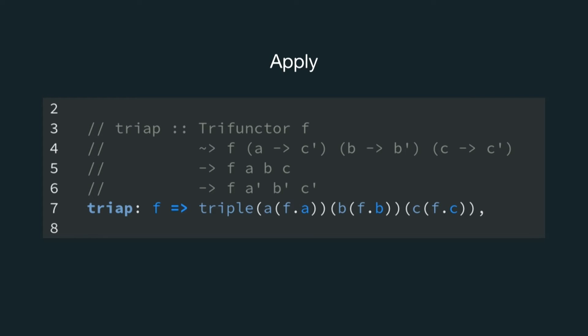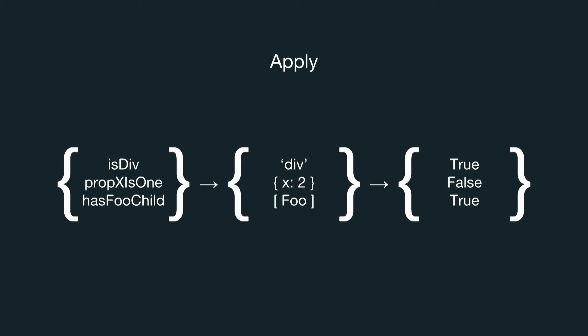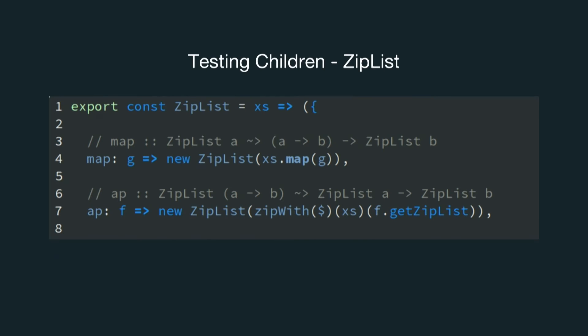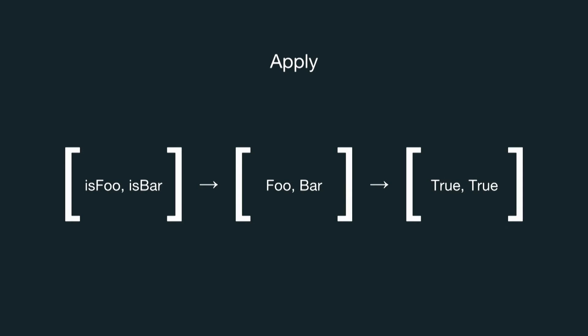Tri-ap, to implement the apply specification, is not too different in implementation. Now we provide a triple representing three functions rather than providing three functions as in the tri-map call. Given a triple of A-to-B functions — where we can imagine A-to-B being a VDOM value to a Boolean — we apply a triple representing VDOM values and get back a triple representing results, in this case Boolean values indicating test success. And if we want to achieve the same functionality for our children's array, which is nested inside a triple, we can make use of an applicative functor for lists called ZipList. In this way we can work in much the same way for our children as we already do with our triple.